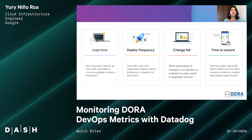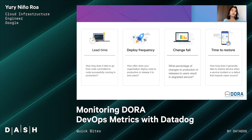The heart of DORA is based on four key metrics: lead time, deployment frequency, change failure rate, and time to restore. The lead time metric for changes is associated with the time from committing a change to deployment to production — in other words, how quickly we can change a line of code and have it running in production. This indicates mature automated testing and a mature CI/CD pipeline able to handle changes.